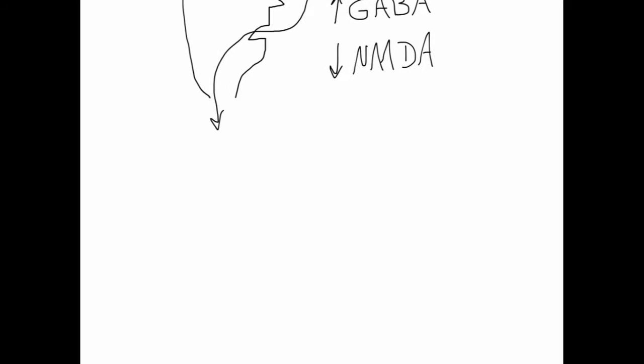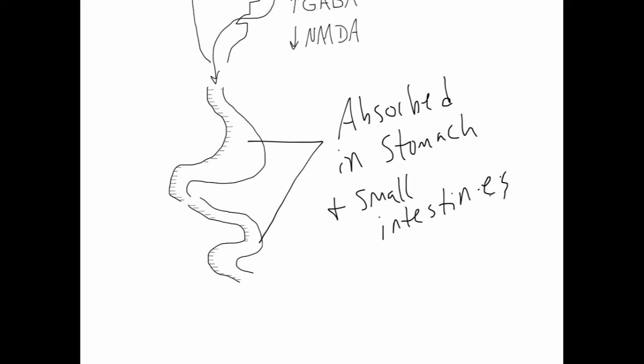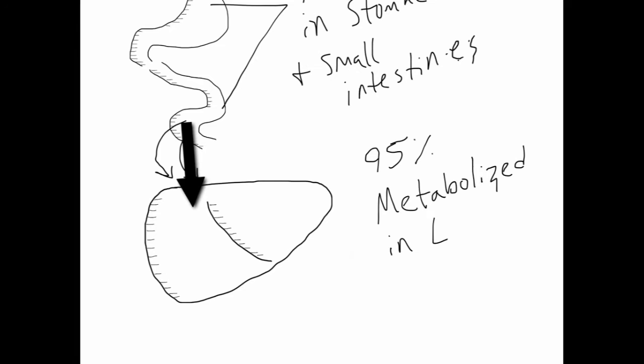Once ingested, alcohol is absorbed by the stomach and small intestines and is widely distributed throughout the body. Alcohol is metabolized in the liver, where 95% of it is metabolized at a rate of approximately one ounce of alcohol per hour. The alcohol is then excreted by the kidneys, skin via sweat, and through the lungs.